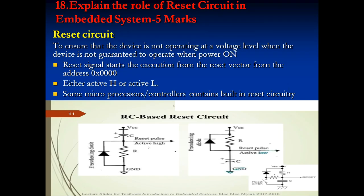Next: explain the role of the reset circuit in embedded systems. The reset circuit is a timing circuit mainly used to ensure the device is not operating at a voltage level below what it is guaranteed to operate at when power is on. If the system cannot operate at the required voltage level, the reset circuit sends a reset signal and starts execution from the reset vector at address 0x00000. You can get two types of reset pulses: active high or active low.